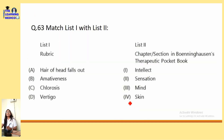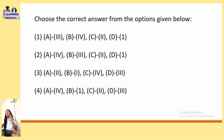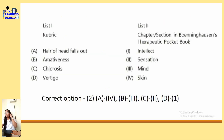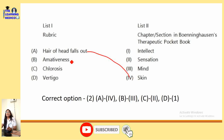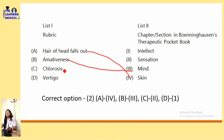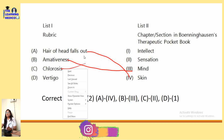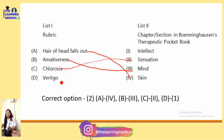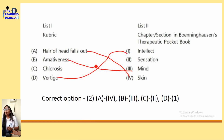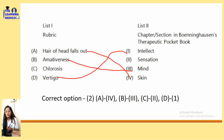What rubric is 'hair of head fall off'? In TPB it is given in Skin. Amitiveness is given in Mind. Chlorosis is given in Sensation and Complaints. And Vertigo is given in Intellect. You need to make your own notes of these rubric placements.